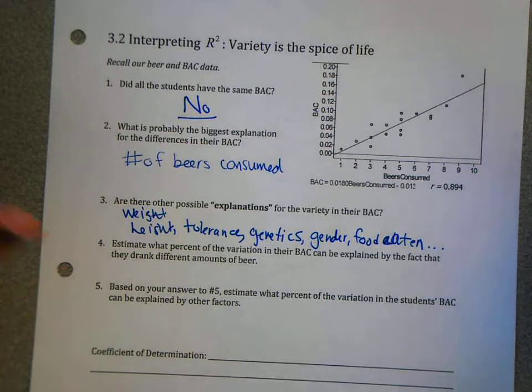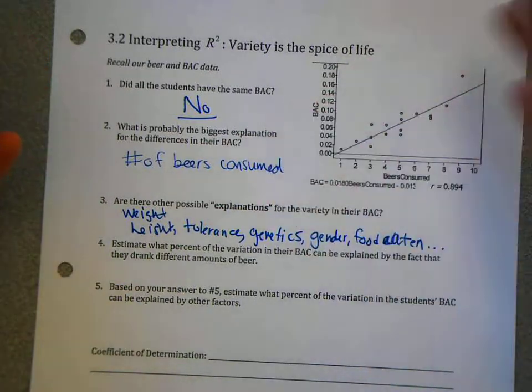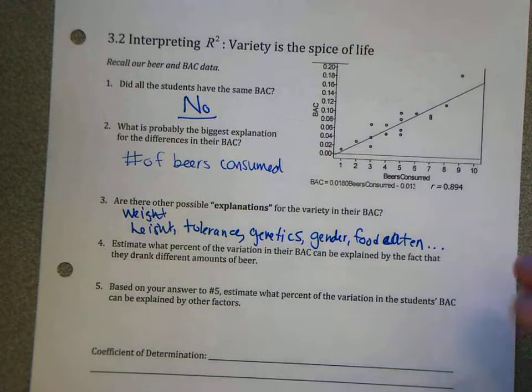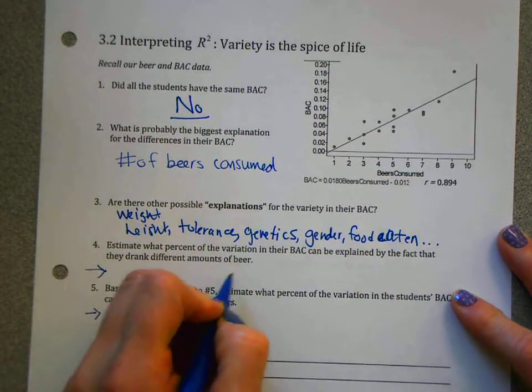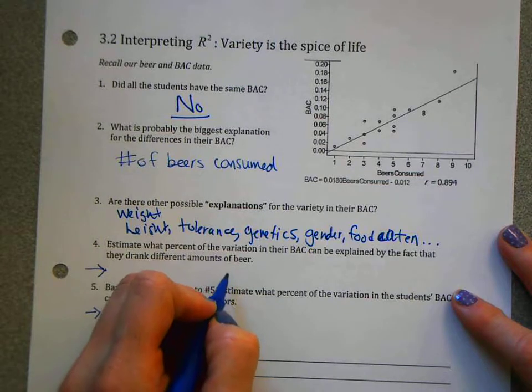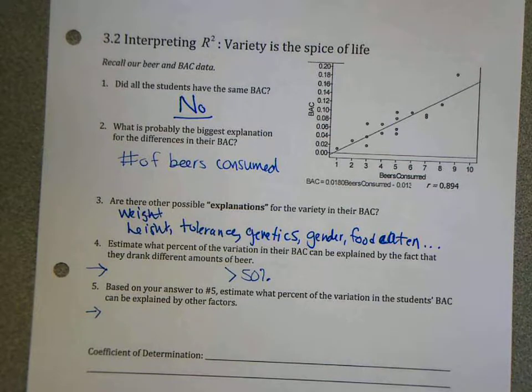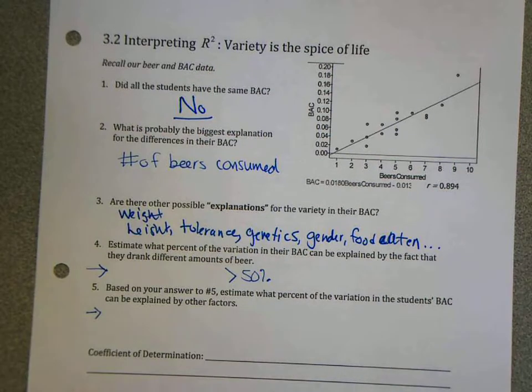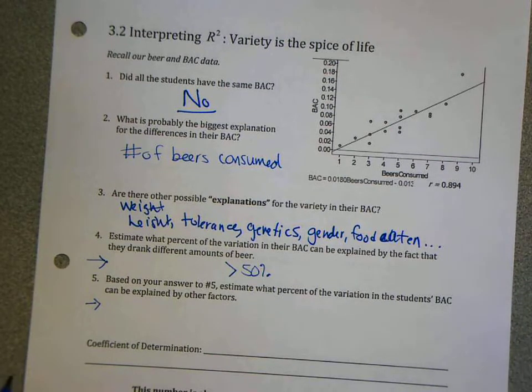So what we want to do is kind of quantify how well the beers are at explaining the variation in the blood alcohol content. So we need a number to kind of estimate that. You can kind of come up with your own estimation. But I mean, I hope we would all agree that it would be, you know, greater than 50%, maybe 70%, 80% kind of range. And then whatever is left over is going to be the percent that is attributed to other factors altogether.